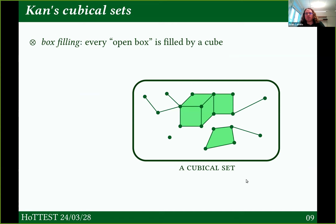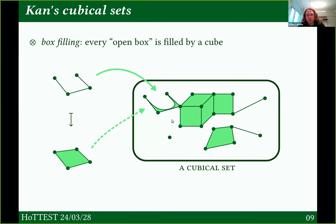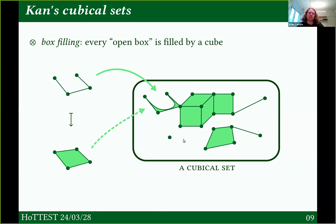What does box filling mean? In my cubical set, every open box I can find should be filled by a cube. An open box looks something like: you have a square, but you're missing one of the faces and the inside. If I find one of these in my cubical set, there had better be a square filling it in. I've drawn the square in a squashed way — I've added an extra path and some kind of surface, squeezed in. This is the topological intuition: whenever I have a bunch of paths I can compose them and get a single path that goes the whole way.